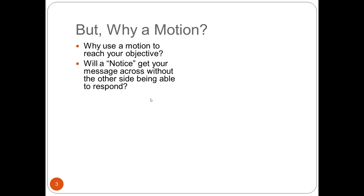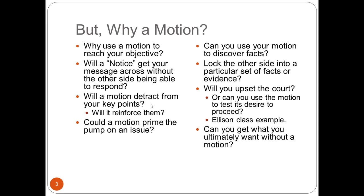Once you have your objective, consider whether a motion is the best mechanism to use for it. A motion might be best when you have something big and important to accomplish. A notice might be something less important — you want to get the information out there but don't want to cause a big fight, and you don't want to give the other side an opportunity to respond. A motion gives the other side a chance to respond. So if you're going that direction, this is where you should be. Otherwise, take a look at using a notice instead.